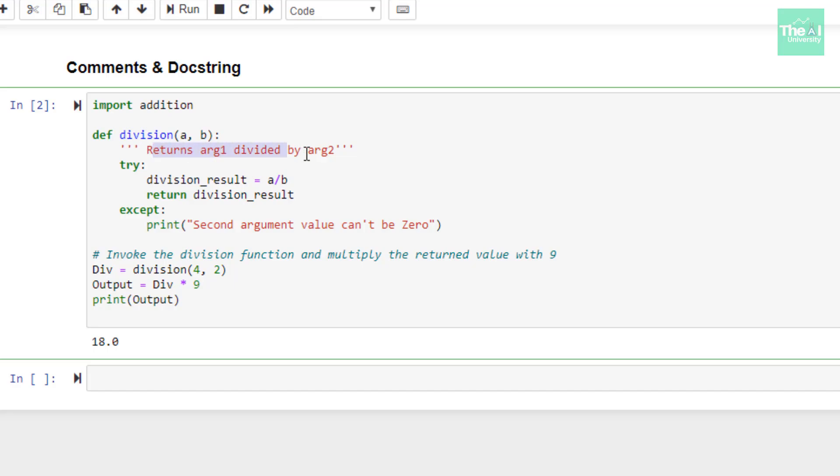So this docstring always starts with a capital letter and is enclosed within three inverted commas, three here and three here, so a pair of three inverted commas. It should always begin with a capital letter and the first line should always give a short description. I have kept only one line here but if you have multiple lines that first line should always give you a short description. So this is the docstring related to this division function.